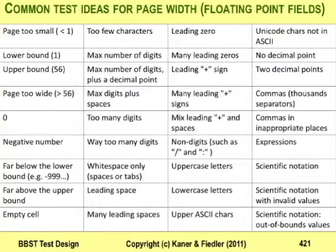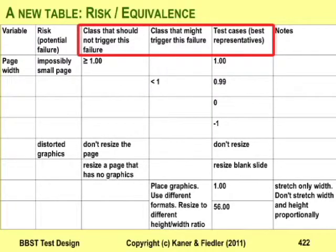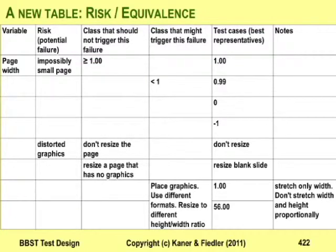How do we show this on a table? I relied on the traditional equivalence class table for a long time and still use it for basic boundary analyses. But when I start thinking about what can go wrong with a field — what its risks are — I find it easier to work with a risk-oriented table that explicitly incorporates risk-oriented thinking into the analysis. It's still focused on equivalence classes, just organized differently. You fill it out in a different order, and in my experience, that change in order changes how you think about the problem.